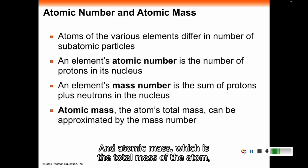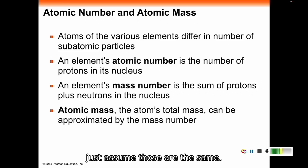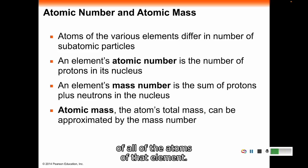The mass number is the sum of the protons and neutrons. Remember electrons don't affect the weight here. Atomic mass, which is the total mass of the atom, can be approximated by mass number. There are technically some important differences between atomic mass and mass number, but for the purposes of this class we are going to assume those are the same.